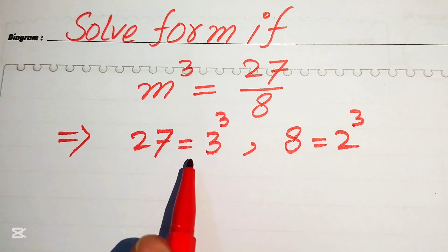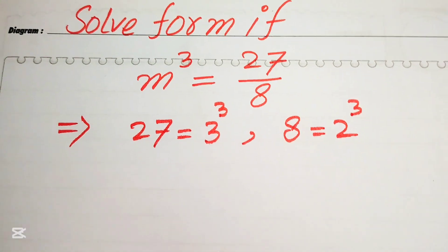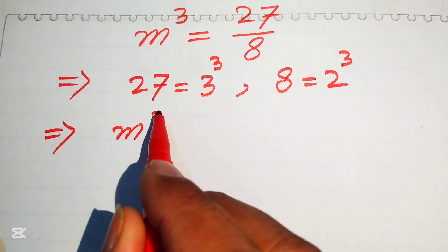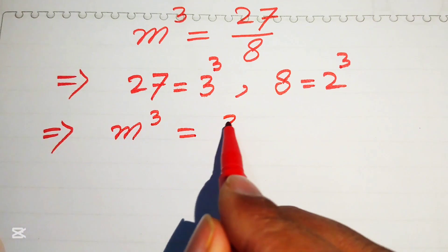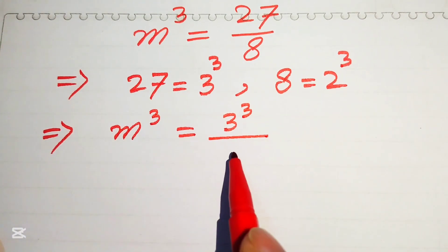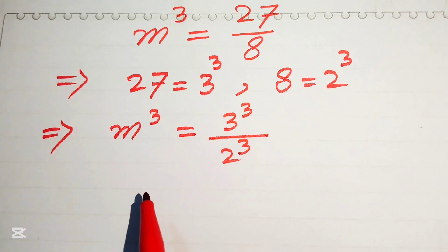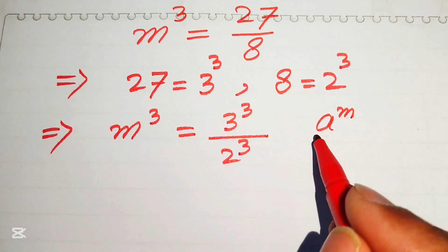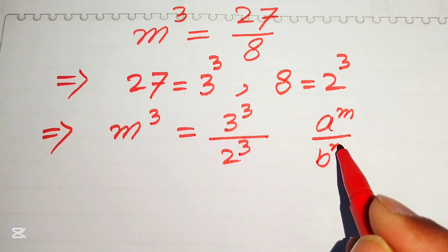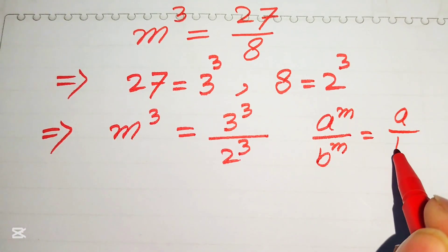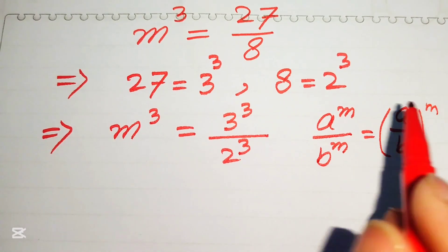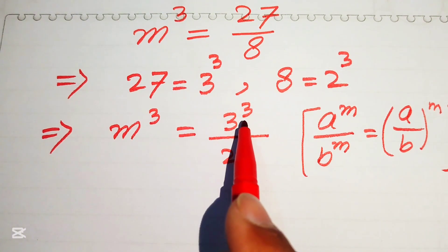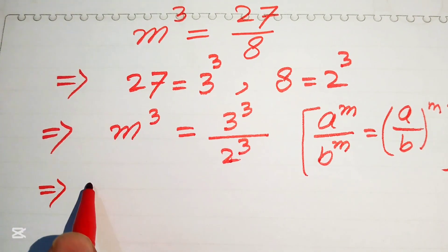We replace 27 with 3³ and 8 with 2³, so our equation becomes m³ = 3³/2³. Now we combine these two exponents using the law: a^m divided by b^m equals (a/b)^m. According to this law, we can combine the exponents of the two terms.